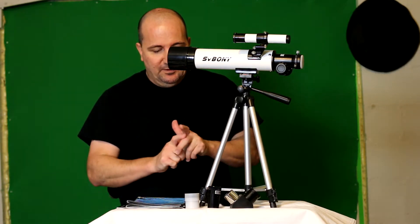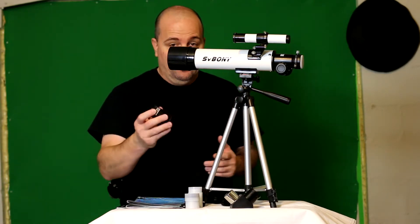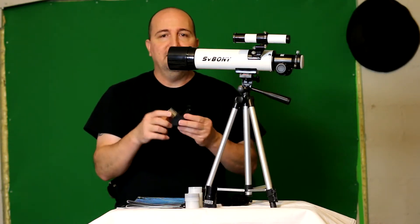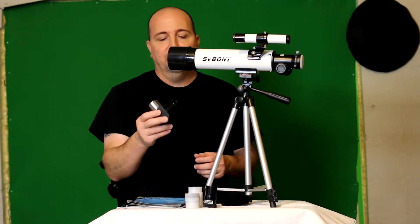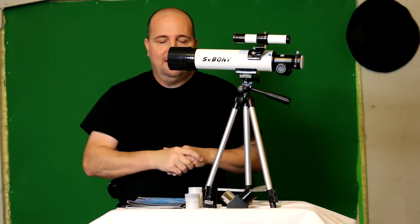It also comes with a three times Barlow lens, so it gives you three times the magnification. So it's really nice if you really want to get close. It comes with a 90 degree zenith diagonal, so you can see everything in the right perspective.